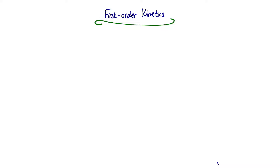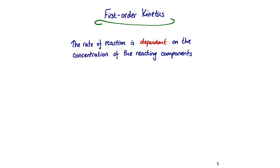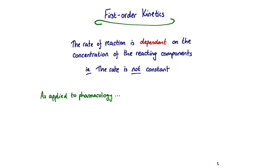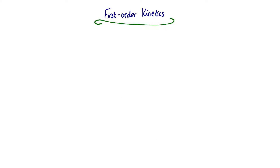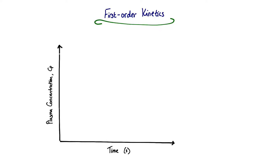Moving on to first order kinetics: for zero order kinetics the rate of the reaction was constant and independent of substrate concentration, whereas for first order kinetics the rate of reaction is dependent on the concentration of the reacting components — the rate is not a constant. Applying that to pharmacology, the rate of elimination of a drug is dependent on the plasma drug concentration.